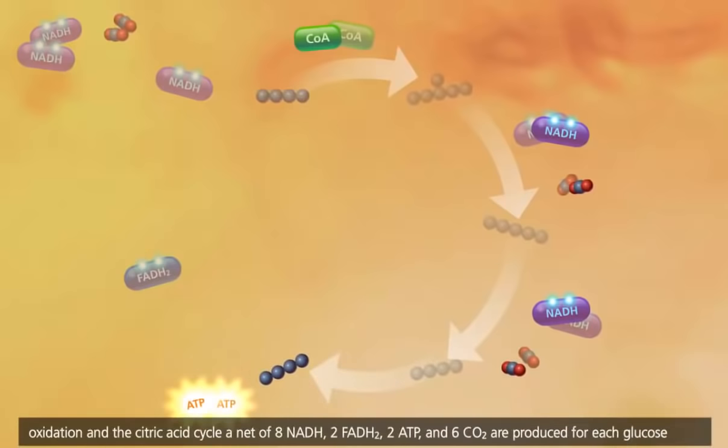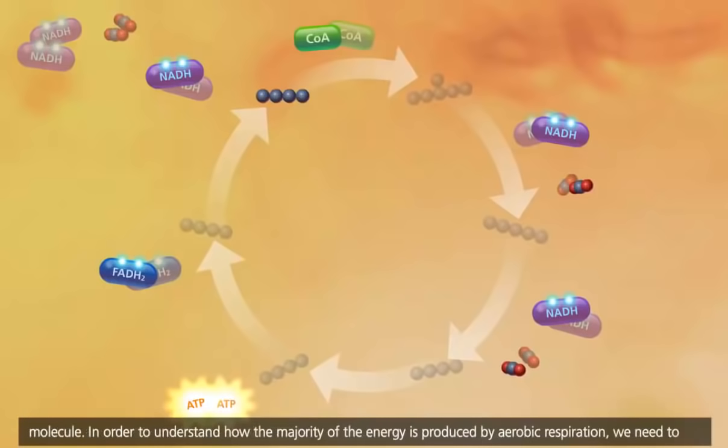During pyruvate oxidation and the citric acid cycle, a net of 8 NADH, 2 FADH2, 2 ATP, and 6 CO2 are produced for each glucose molecule.